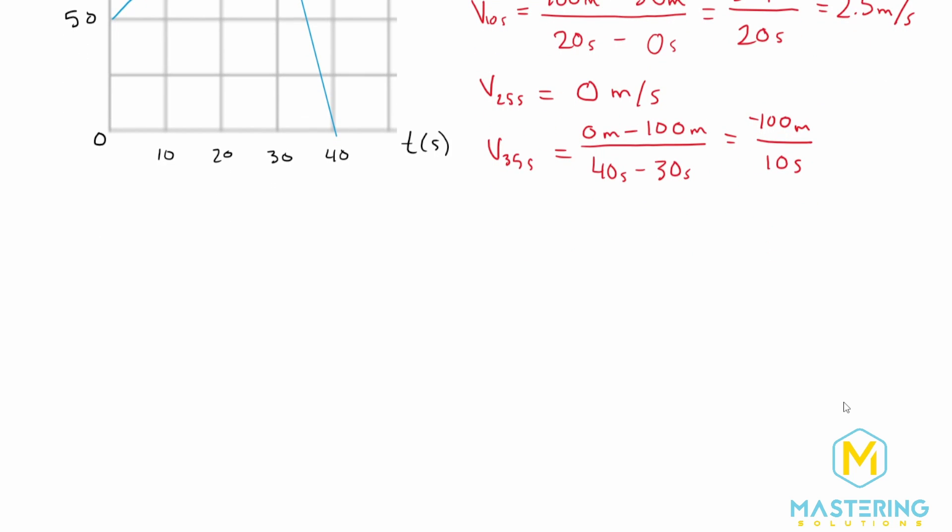So again doing some mental math, we can get rid of these zeros. So we have negative 10 over 1, or negative 10 meters per second.